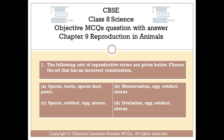Option B: Menstruation, egg, oviduct, uterus. Option C: Sperm, oviduct, egg, uterus.